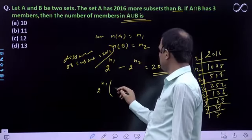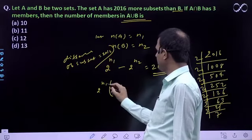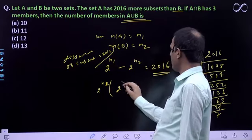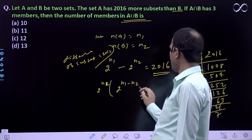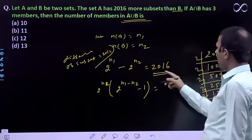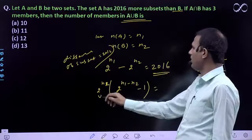We can factor out 2 to the power n2, giving us 2 to the power n2 times (2 to the power (n1 minus n2) minus 1) equals 2016. Now we need to express 2016 as a power of 2.